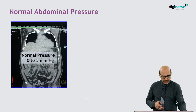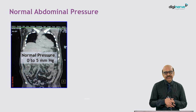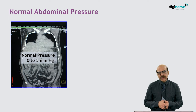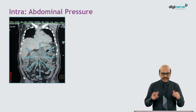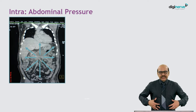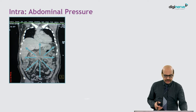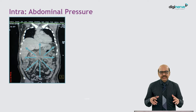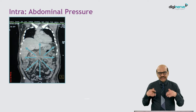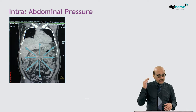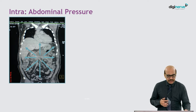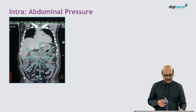The normal intra-abdominal pressure varies anywhere between 0 to 5 millimeters of mercury. This changes with various activities such as getting up, sitting, coughing, sneezing, and even with inspiration and expiration.